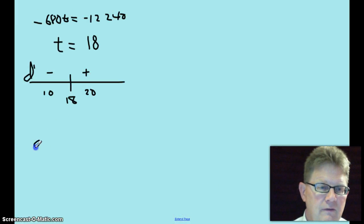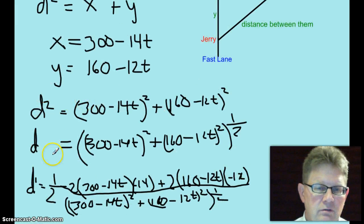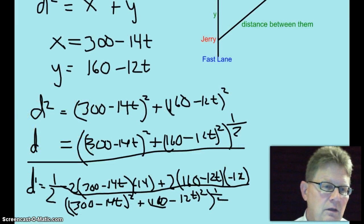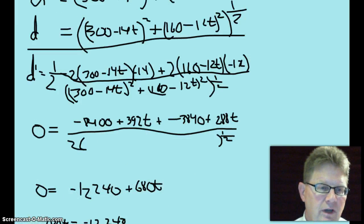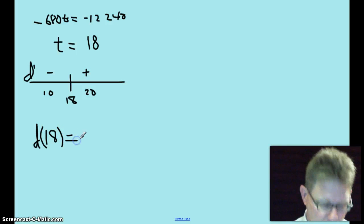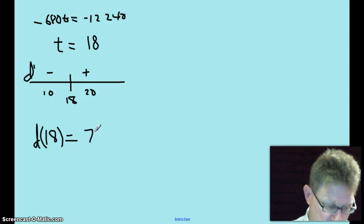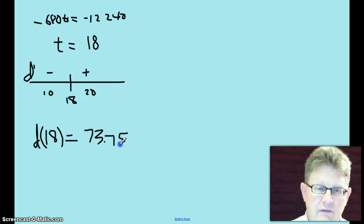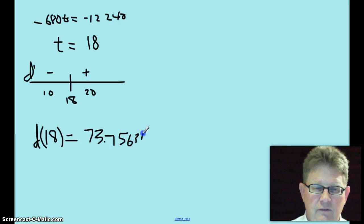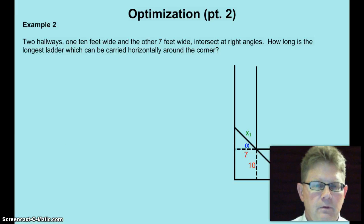So let's go ahead and find out how far they were apart. We want to find d of 18. Put that back up into the original equation right here. And when we do that, we'll find that d of 18 equals 73.75636 feet. So that was the closest that they got, 73.75636 feet. Alright, let's move on to the second example.